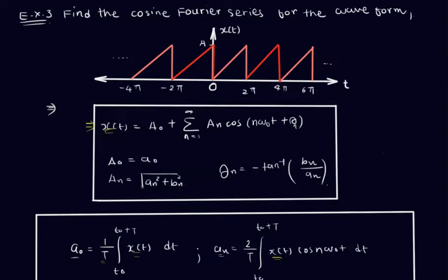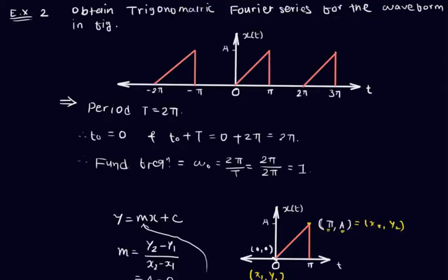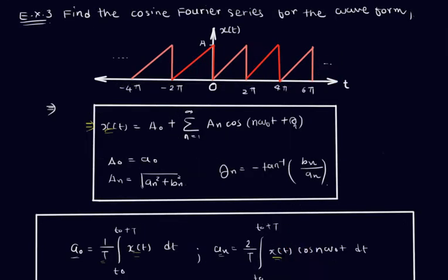In our previous lecture, we had discussed one particular sawtooth wave and calculated the Fourier series in trigonometric form. In today's session, we are going to discuss the same waveform — a full wave sawtooth — and find the cosine terms of the Fourier series.